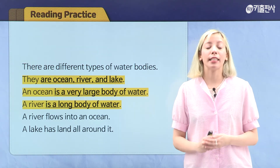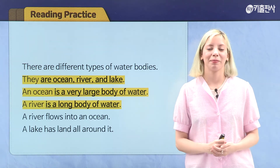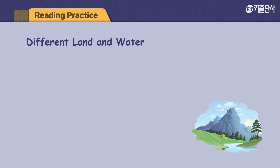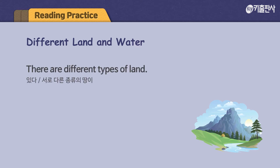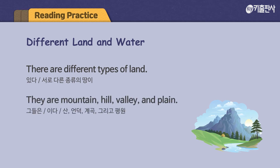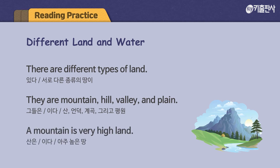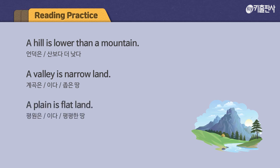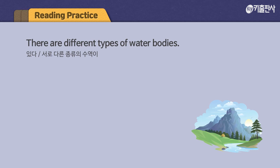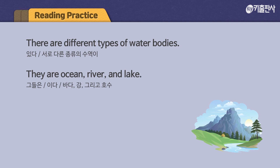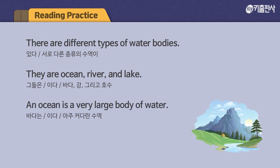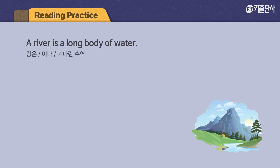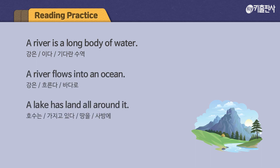So in our reading today they're talking about different land and water. Let's read the passage one more time. Different land and water. There are different types of land. They are mountain, hill, valley, and plain. A mountain is very high land. A hill is lower than a mountain. A valley is narrow land. A plain is flat land. There are different types of water bodies. They are ocean, river, and lake. An ocean is a very large body of water. A river is a long body of water. A river flows into an ocean. A lake has land all around it.